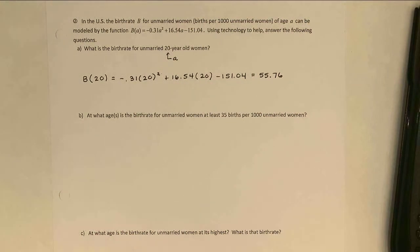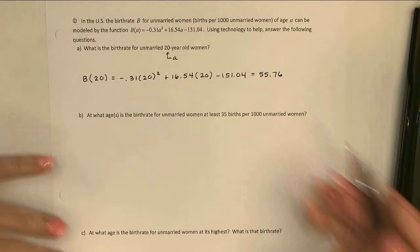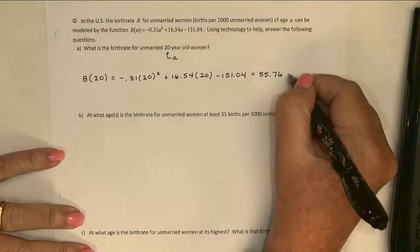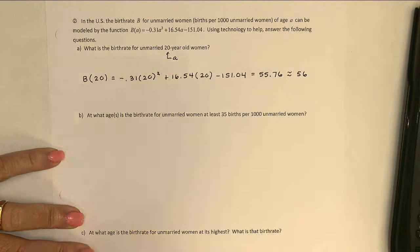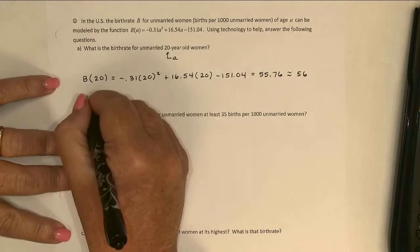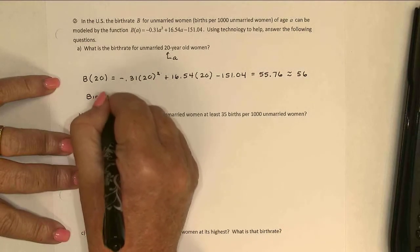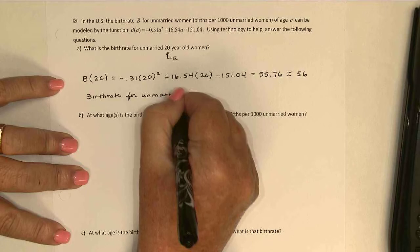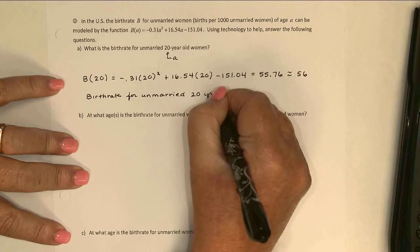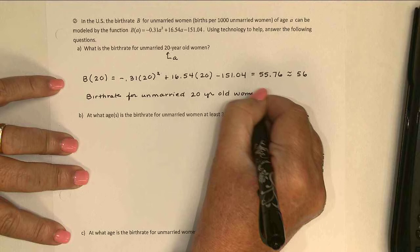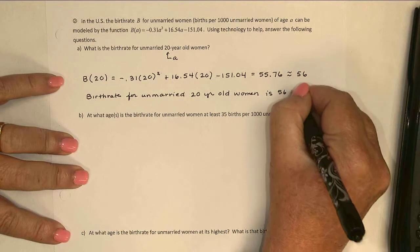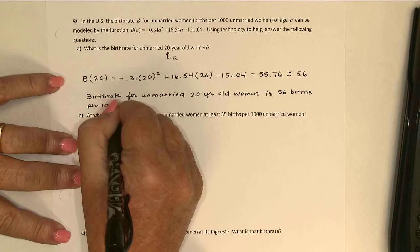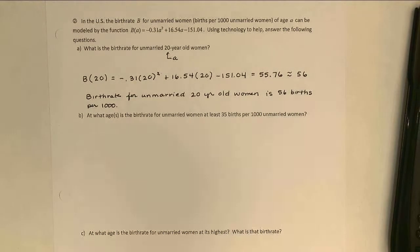Now we're talking about birth rate, how many births in a group of women. So probably it sounds a little bit more reasonable if I round it off, although since it's per 1,000 I don't technically have to. But I'm just going to go ahead and round that up to about 56 to talk about it. So we're saying the birth rate for unmarried 20-year-old women is approximately 56 births per 1,000. So out of every 1,000 20-year-old women, we're saying there are 56 births.